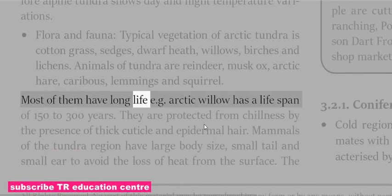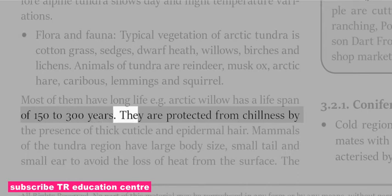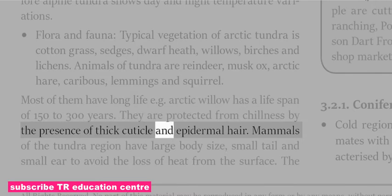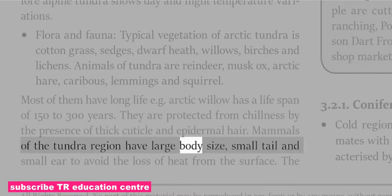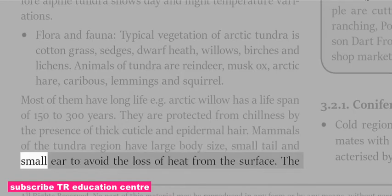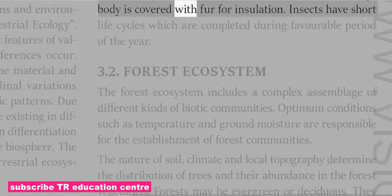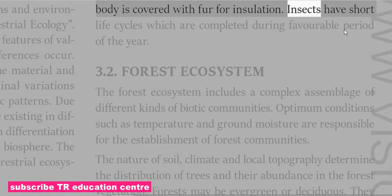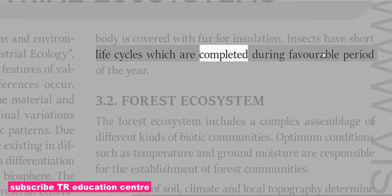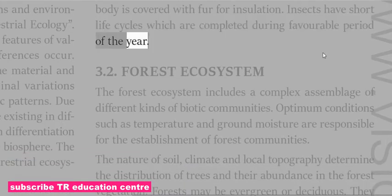Most of the Tundra plants have long life; for example, the Arctic willow has a life span of 150 to 300 years. They are protected from chillness by the presence of thick cuticle and epidermal hair. Mammals of the Tundra region have large body size, small tail and small ears to avoid heat loss. The body is covered with fur for insulation. Insects have short life cycles completed during favorable periods of the year.